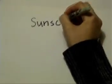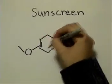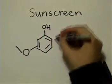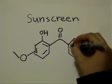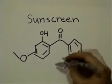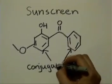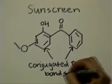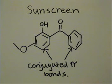Sunscreen is a molecule that contains conjugated pi bonds. These conjugated molecules are able to absorb light, thereby protecting your skin from the damaging sun rays. The more conjugated pi bonds there are, the higher wavelength the sunscreen can absorb. Therefore, through delocalizing its electrons, sunscreen can protect your skin from the sun.